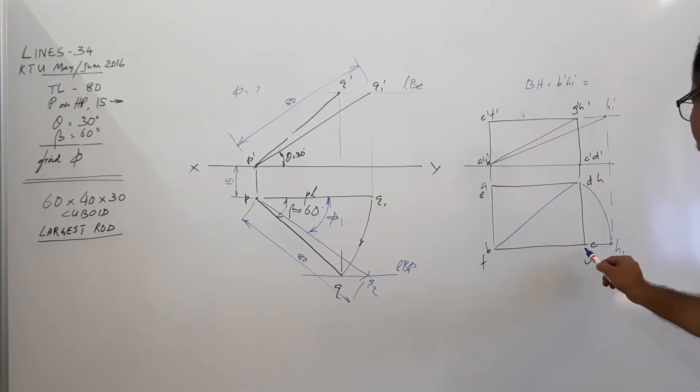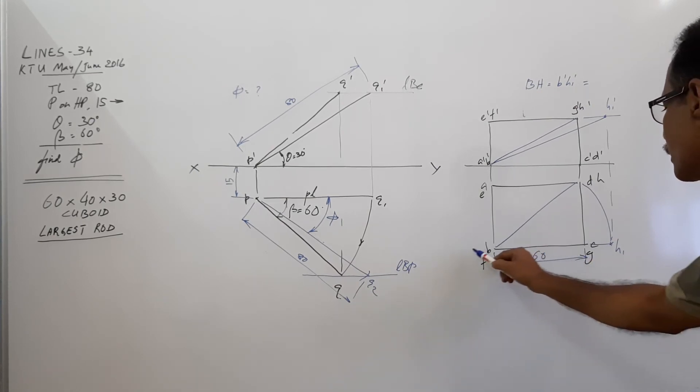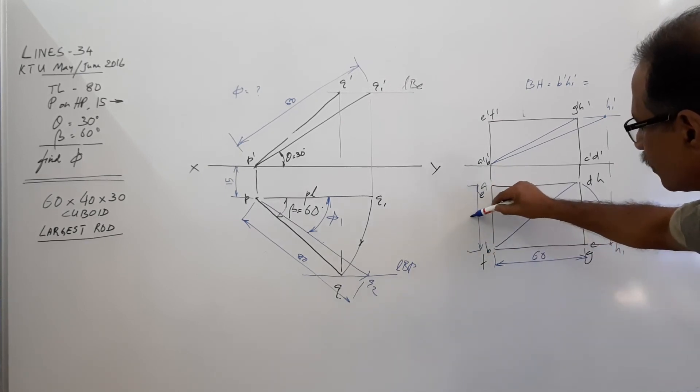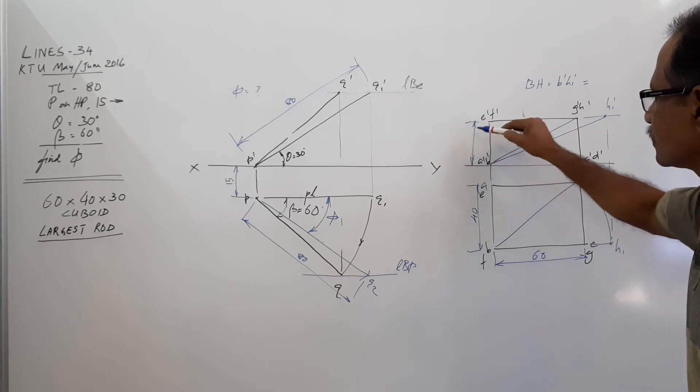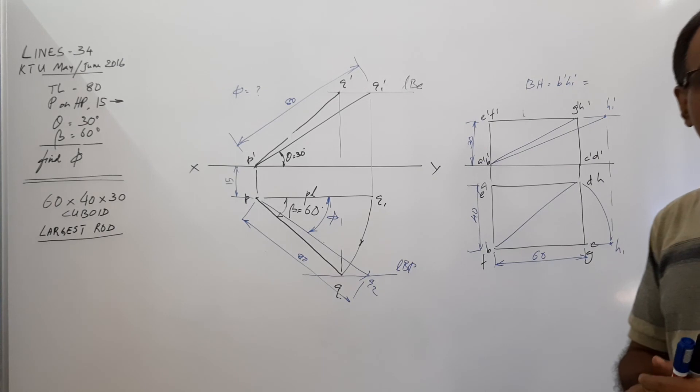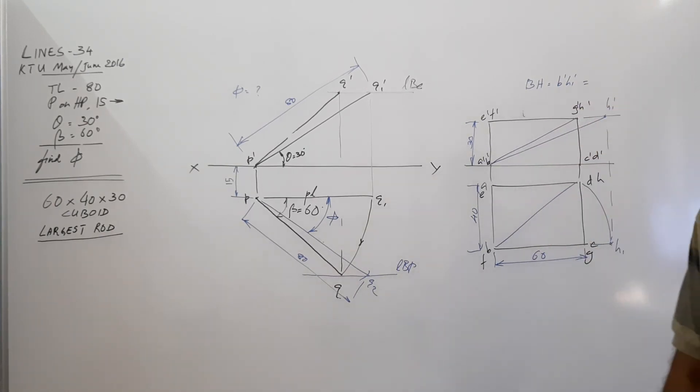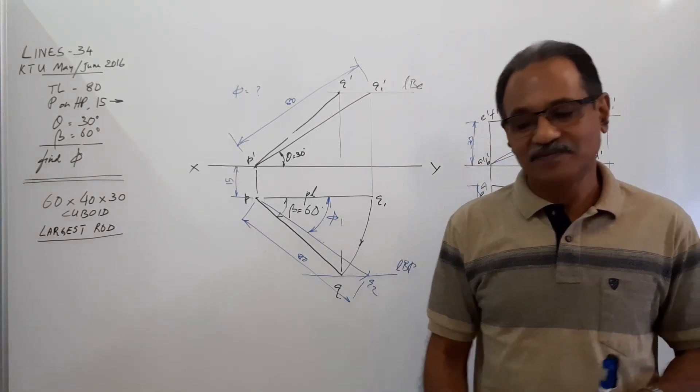You can give the answer. If you mark dimensions, this is 60, this is 40, and this is 30. Agreed? You have to measure and give the answer. Okay then, thank you.